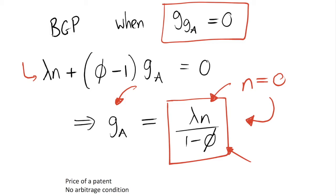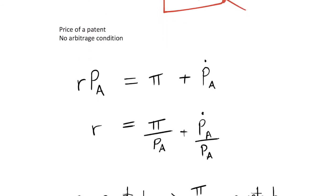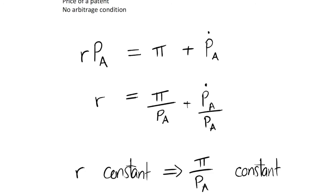In this model we do have a balanced growth path with a positive growth rate, which is what we were looking for. We can now derive what the price of a patent is coming out of the R&D sector. We think of this as a no-arbitrage condition: the opportunity cost must equal the benefit of owning a patent, or equivalently, how much someone buying the patent is willing to pay. We assume patents last forever, which simplifies this considerably.